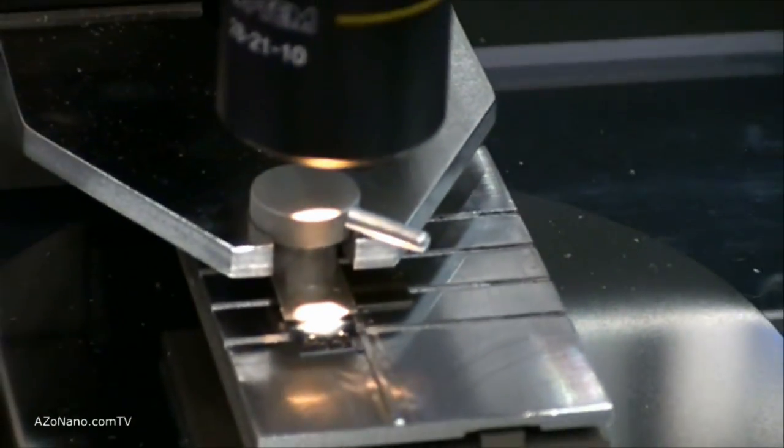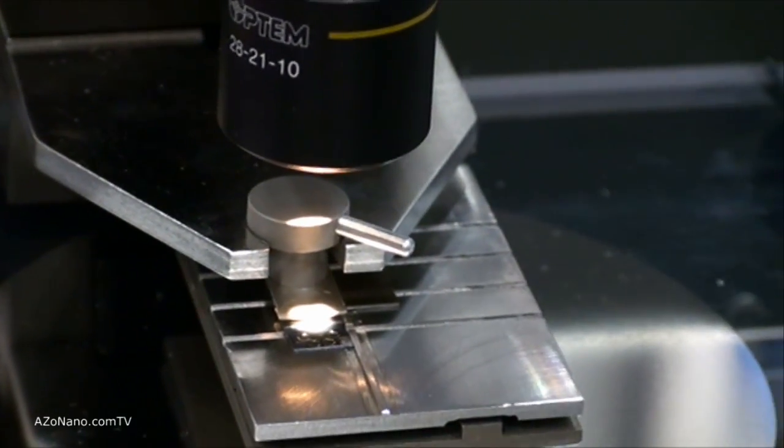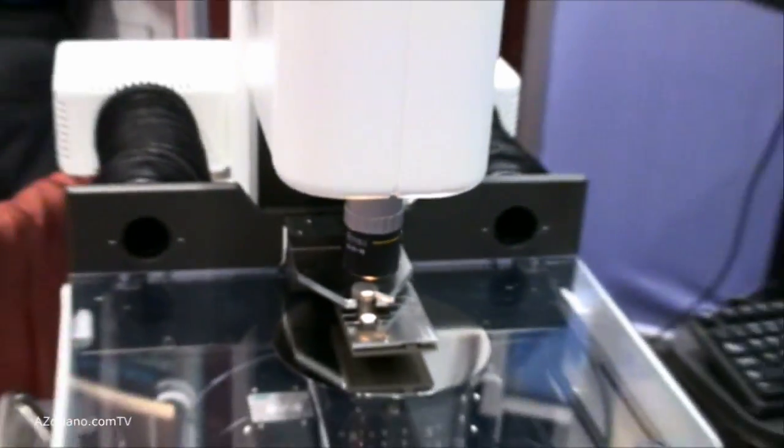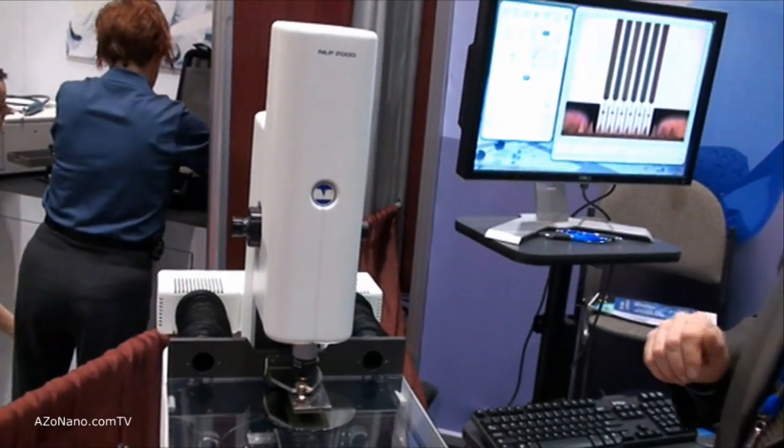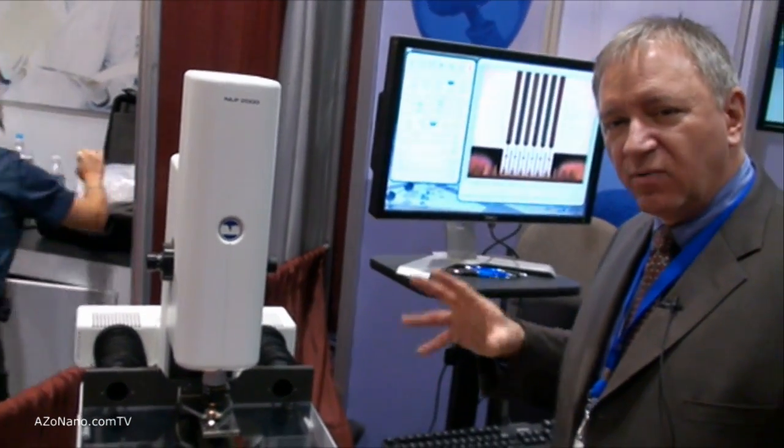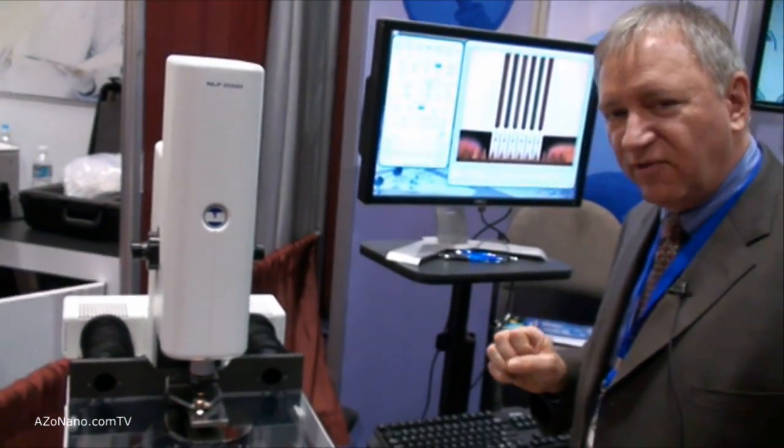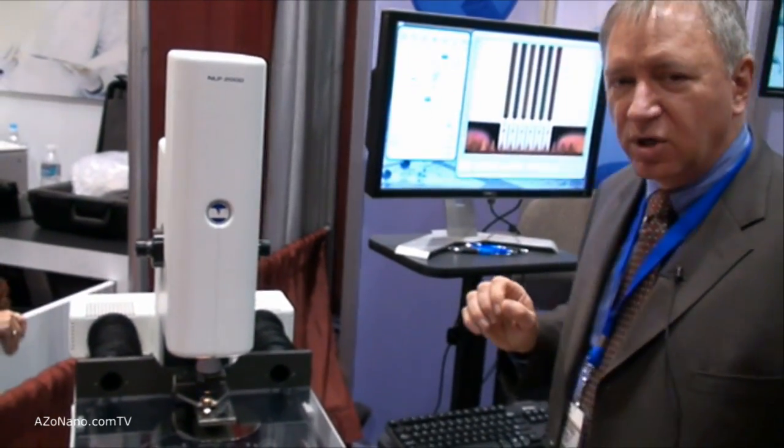It depends on the chemistry and the inks that are used. A high-resolution camera system above that allows us to see features as small as about 300 nanometers. We've done resolution standards to qualify the system, so it is a very good camera system.